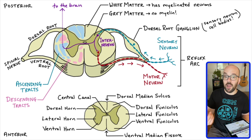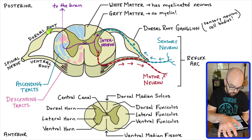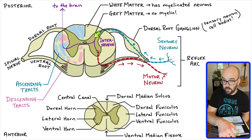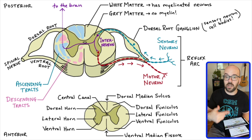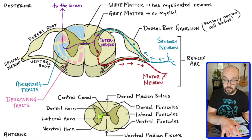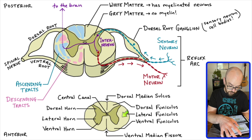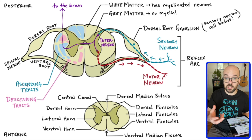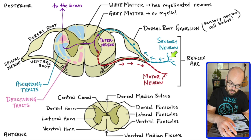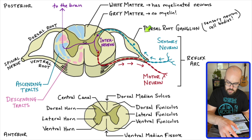Let's recap. In our cross-section of the spinal cord, we have dorsal roots and ventral roots — branches of each spinal nerve. We have two types of nervous tissue: white matter, which contains myelinated neurons, and gray matter, which contains unmyelinated neurons. The myelin sheaths speed up the action potential. Anatomical areas include the dorsal, lateral, and ventral horns of the gray matter, the dorsal, lateral, and ventral funiculi of the white matter, the ventral median fissure, the dorsal median sulcus, and the central canal, which contains cerebrospinal fluid that allows nutrients to circulate throughout the brain and spinal cord. The cell bodies of sensory neurons are located in the dorsal root ganglia.